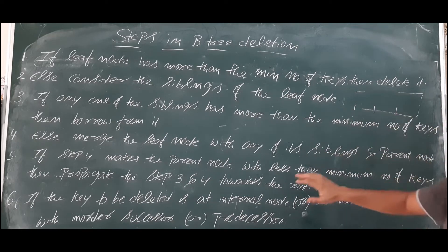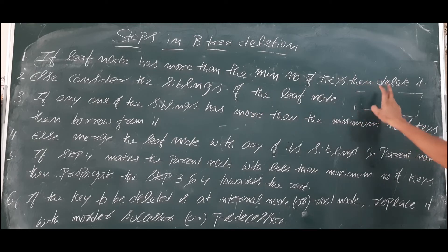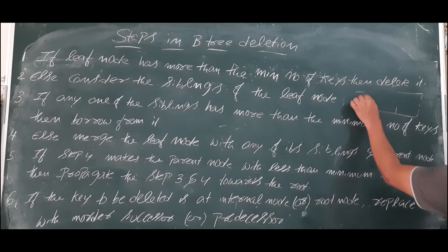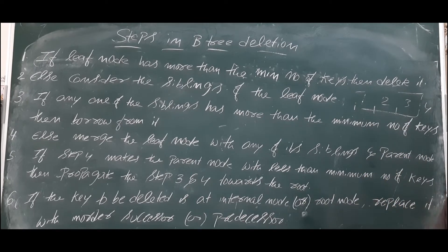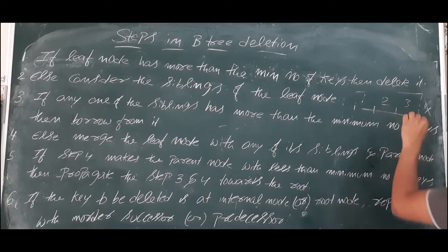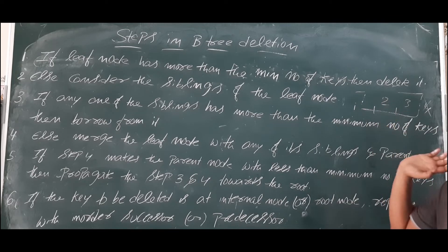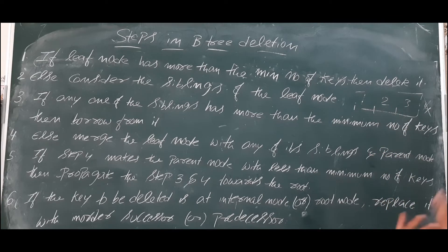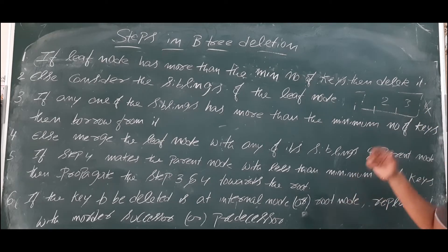If it is a leaf node and it has more than the minimum number of keys, then delete it — no problem. For example, if we have four elements and the minimum is three, we can delete one element without any problem because the node is still not in underflow condition. So if it has more than the minimum number of keys, simply delete the key you want to delete.